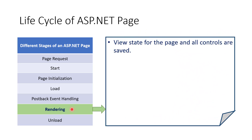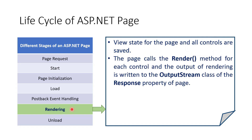The sixth stage is Rendering. Prior to rendering the page, the view state for all controls on the page is saved. While rendering, the ASP.NET runtime invokes the Render method for each control on the page and writes the output of the rendering stage to the output stream object of the page's Response property.